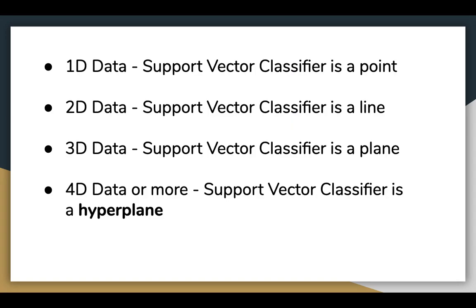For one-dimensional data, the support vector classifier is a point. For two-dimensional data, the support vector classifier is a line, as seen in the previous slide. For three-dimensional data, the support vector is a plane. And for four-dimensional data or more, the support vector classifier is a hyperplane.